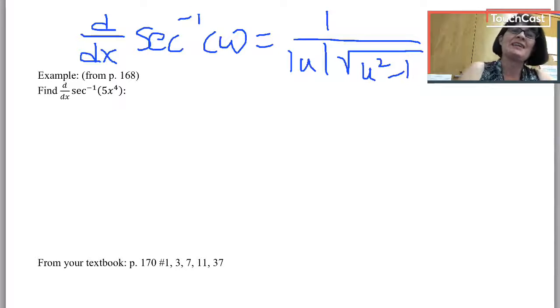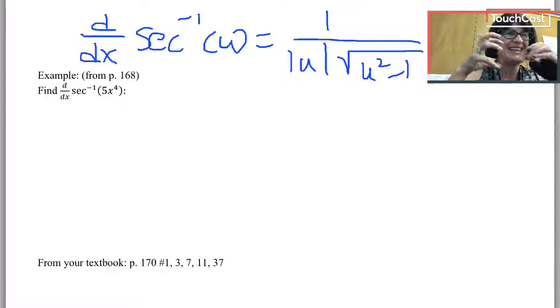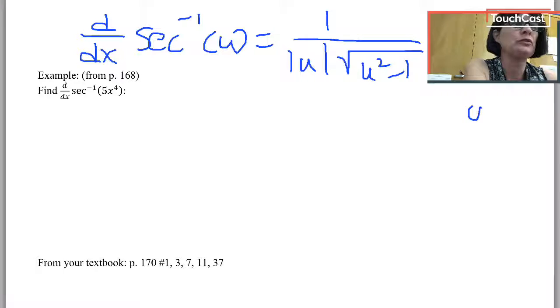So in this case, my u is the thing that's getting inverse secanted. So u is 5x to the 4th. du dx should be pretty easy to find.